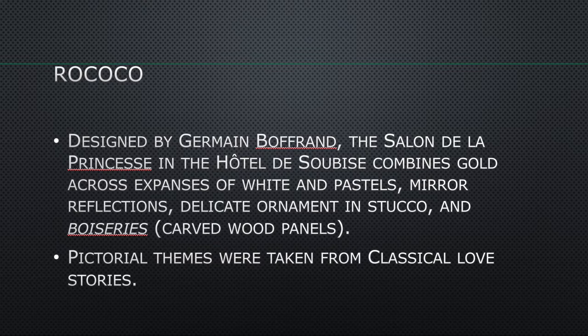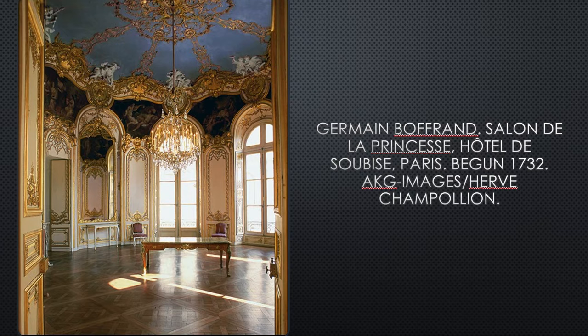We're going to first examine the Rococo, then leave it behind. We start with architecture: a space designed by Germain Boffrand, the Salon de la Princesse in the Hôtel de Soubise. It combines gold across expanses of white and pastels, mirror reflections, delicate stucco ornament, and boiseries — carved wood panels. Pictorial themes were taken from classical love stories, with absolutely nothing to do with the religious furor that swept through Europe in the 17th century.